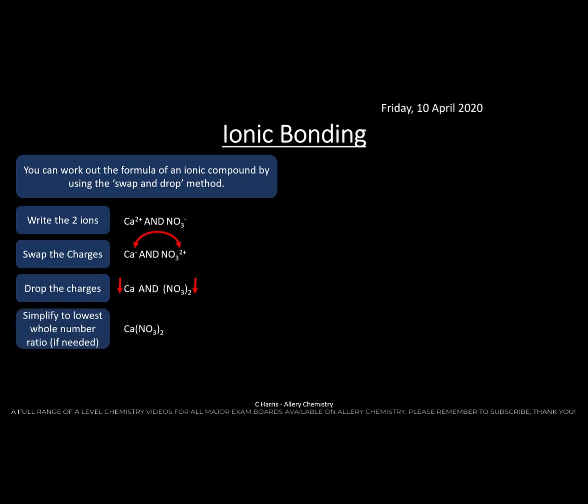Then we simplify to the lowest whole number ratio if needed. In this case it's already a 1:2 ratio, so the formula is Ca(NO₃)₂. Here's another example: calcium (Ca²⁺) and oxide (O²⁻). Swap and drop gives Ca₂O₂, which simplifies to CaO. That is how we write formulae for ionic compounds.